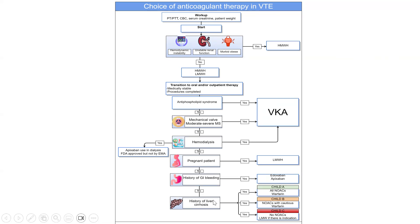If the patient has a history of liver cirrhosis, this depends on the Child-Pugh classification. For Child A, the switch can be to any type of oral anticoagulant or warfarin. For Child B, switching to a new oral anticoagulant is also possible but should be done cautiously, as there are limited studies on DOAC use in advanced liver disease; warfarin is also an option. For Child C, if therapeutic anticoagulation is still indicated, the only option for switch is low molecular weight heparin.